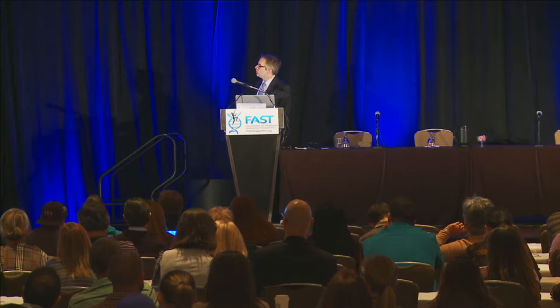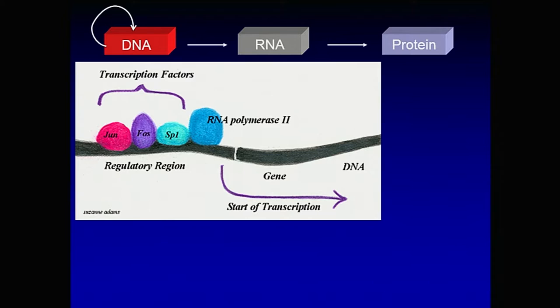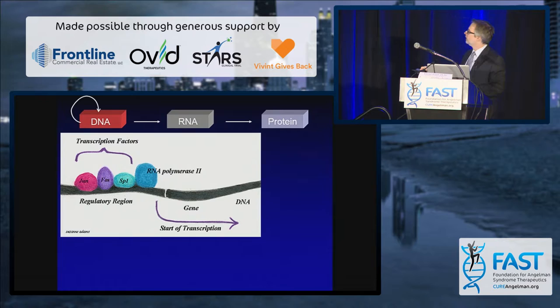One of the ways that our cells do that is using something called transcription factors. Transcription factors are other proteins, and they usually have to bind to the gene — to a region that's a little bit upstream of the part that codes for the protein. There are some binding sites over there, and when these proteins bind, they're going to help bring in that enzyme that's going to make the RNA. Without them, that enzyme doesn't know to come to that gene and turn it on.